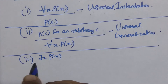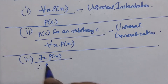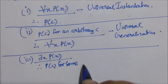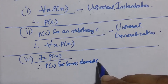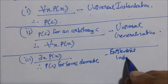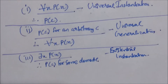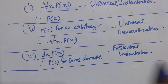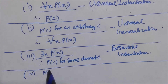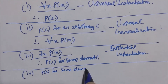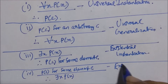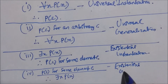If there exists X such that P of X is true, which means there is at least one value for X in the domain for which P of X is true, we can conclude that P of C is true for some element C — there is at least one element C for which P of C is true. That is called existential instantiation. And the next rule: suppose P of C is true for some element C, then we can conclude there exists X such that P of X, because we have an element C for which P of C is true. This is called existential generalization.